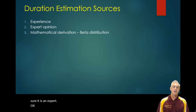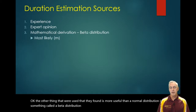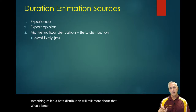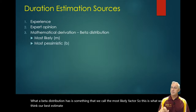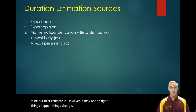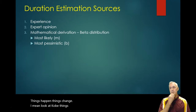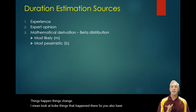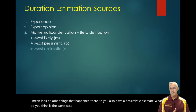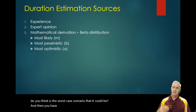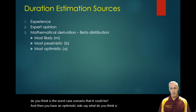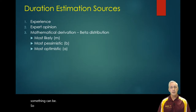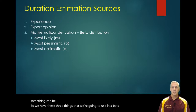The other thing that's been found to be more useful than a normal distribution is something called a beta distribution. A beta distribution has what we call the most likely factor — this is what we think our best estimate is. However, it may not be right. Things happen, things change. So you also have a pessimistic estimate — what's the worst case scenario? And then you have an optimistic side — what's the best case scenario? We have these three things that we use in a beta distribution, which is different than normal.